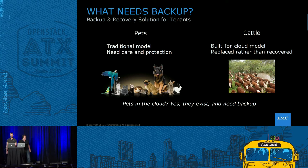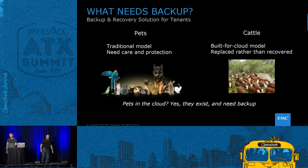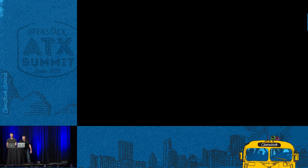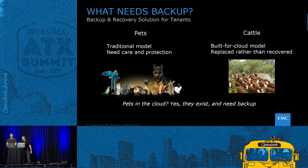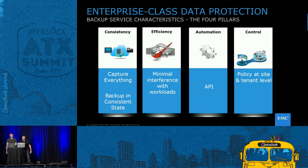Our customers have told us very clearly that they're moving pets to the cloud — their valued applications in very large numbers. Also from a developer's point of view, deploying an application to the cloud makes a lot of sense, so pets make a lot of sense. When you're building a backup product for enterprise use, there are four things to mainly consider: consistency, efficiency, automation, and control.